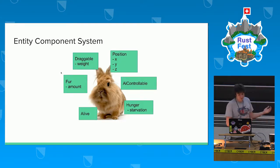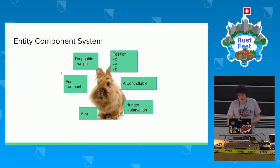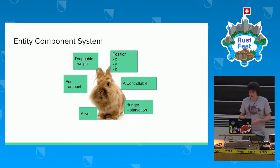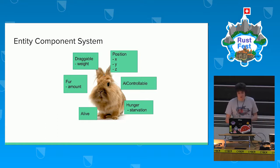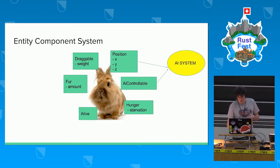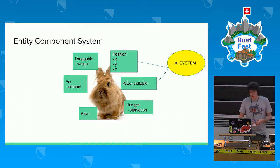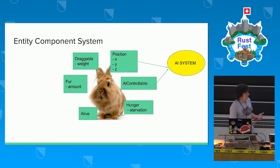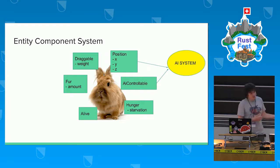Imagine you have an object — every game contains a lot of objects. Take a rabbit. The rabbit has some properties, also called components, like position, health, alive, and IE controllable. All the properties are just plain structs with plain data — no behavior, no logic. When we need to give the rabbit some behavior, we create systems, also called processors. It's a piece of behavior interested in certain properties. For example, an IE system is interested in any object that has both position and IE controllable. The key thing is that the IE system doesn't even know it's a rabbit — it just works with the data.